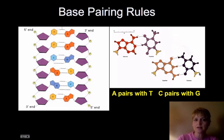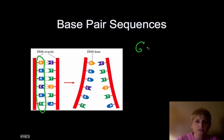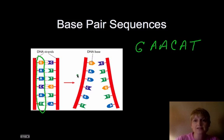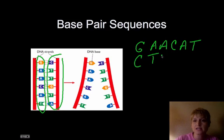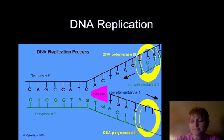These base pair rules are very helpful in figuring out base pair sequences. If we have a strand of DNA that reads G-A-A-C-A-T, we know exactly what the complementary strand has to be. G pairs with C, A with T, A with T, C with G, A with T, T with A. There's no other option — we can always determine the complementary strand from the base pair rules.